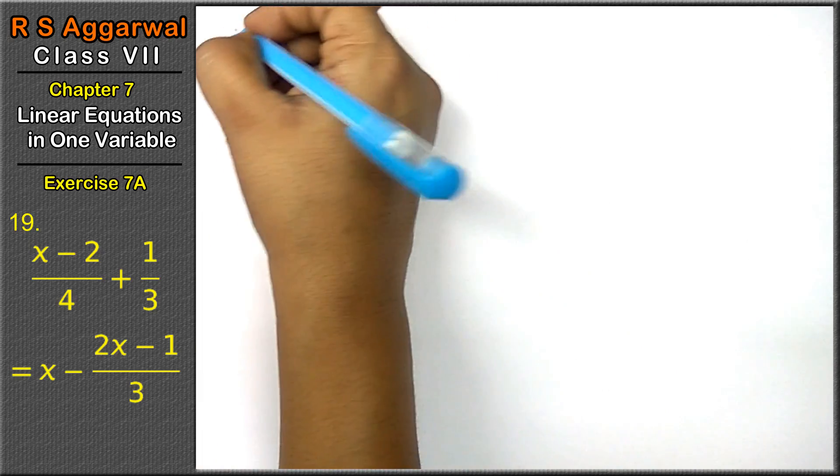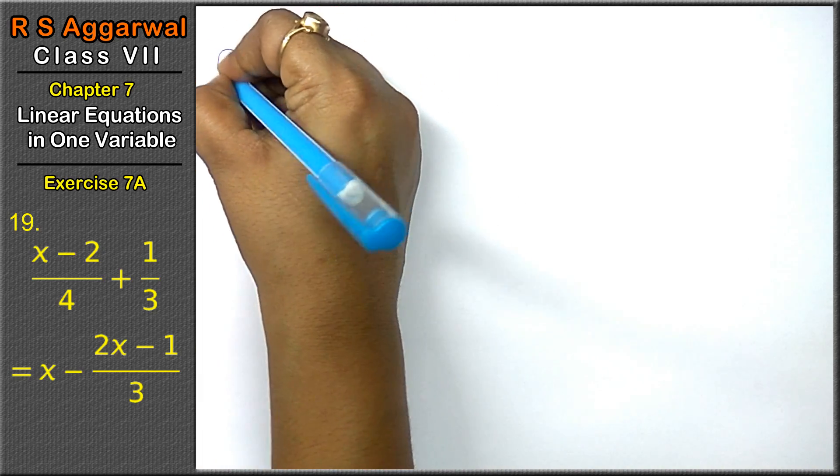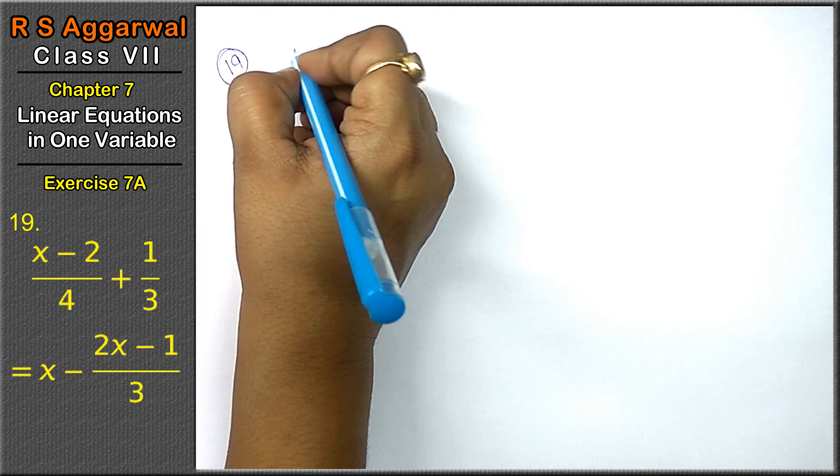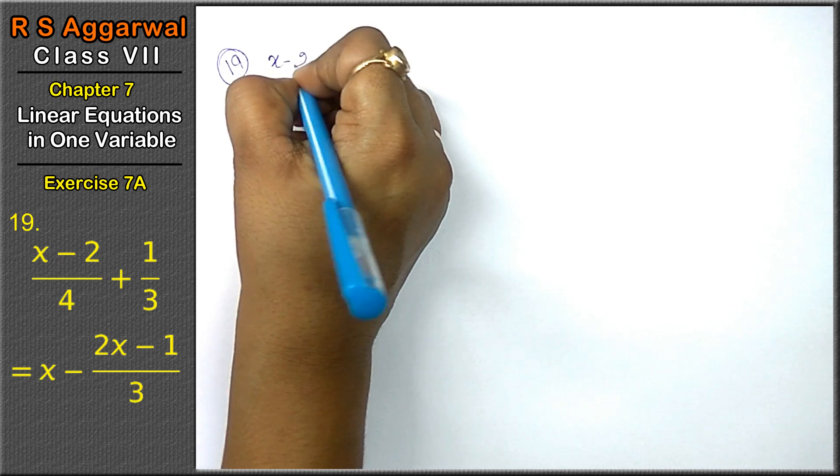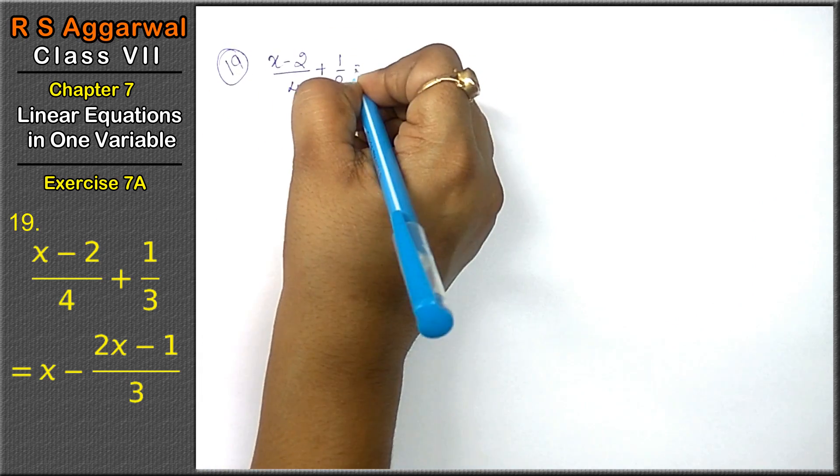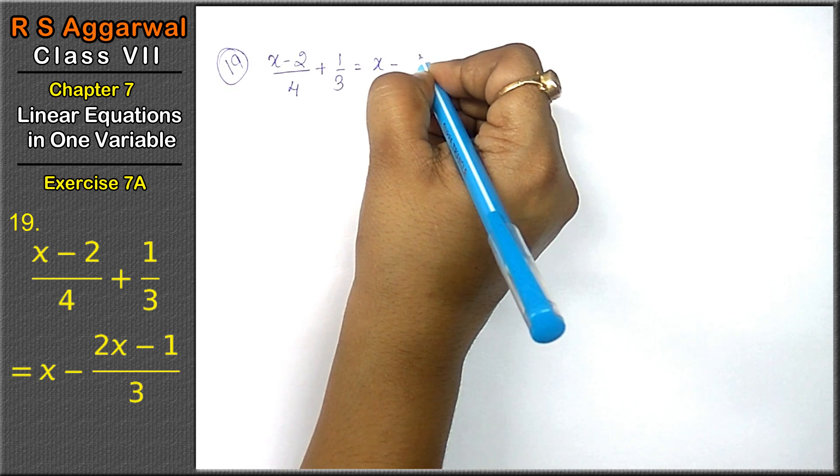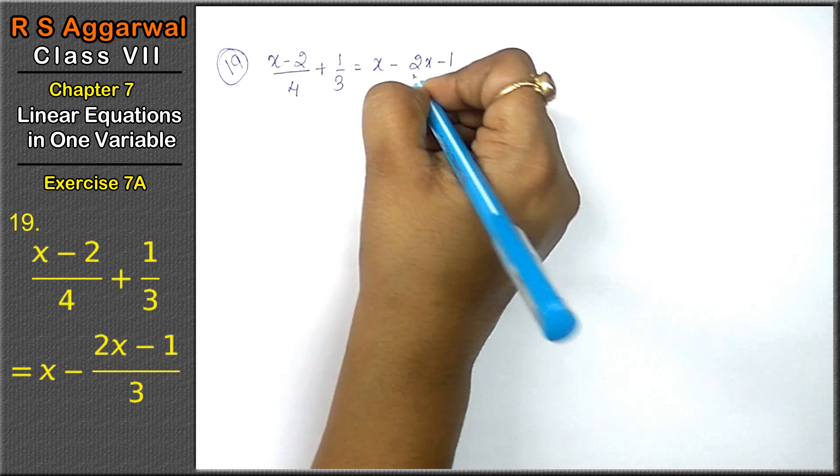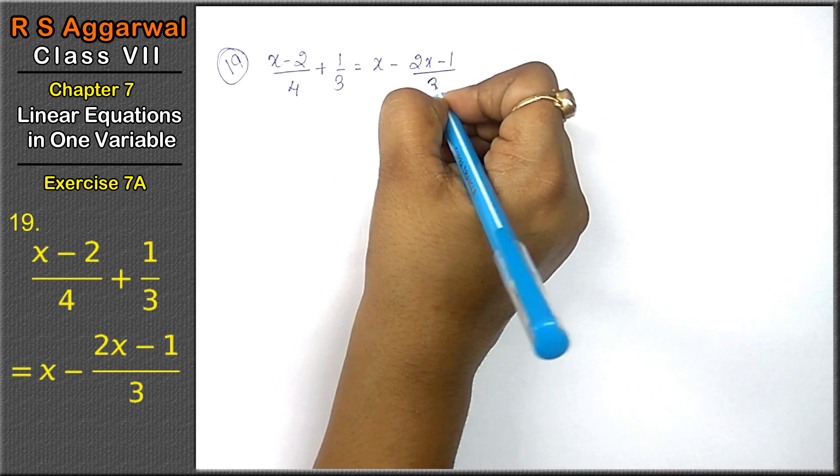Let's do question 19. The question is (x-2)/4 + 1/3 = x - (2x-1)/3.